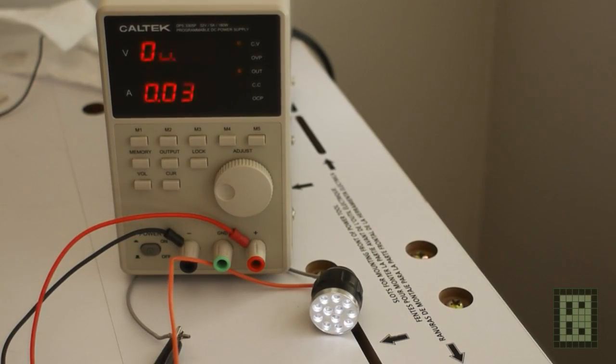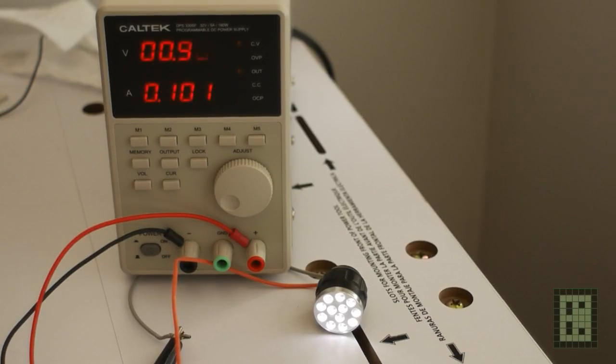You can see here the flashlight head, and you see that at 0.8 volt it's using a bit less than 40 milliamps. And at 1.06 volt that we measured before, it used about 340 milliamps.